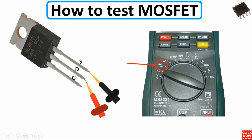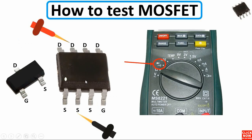A MOSFET has three terminals: gate, drain, and source. A good MOSFET will have a reading between drain and source when you set the multimeter to the buzzer or diode option. If you get a continuity or buzzer reading between drain and source, that means the MOSFET is bad. The only reading you should get is between drain and source. This same working principle applies to the 8-pin MOSFET as well.